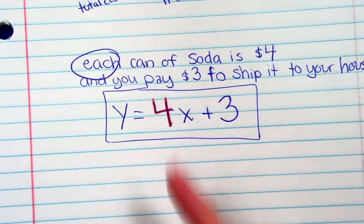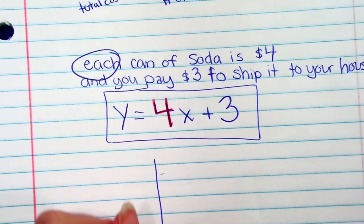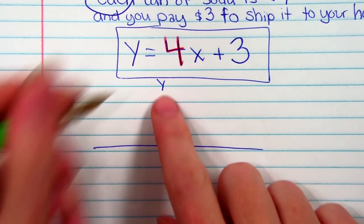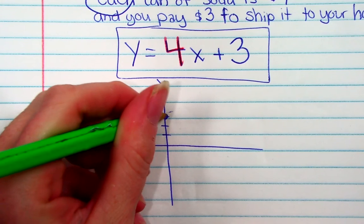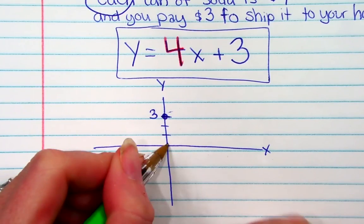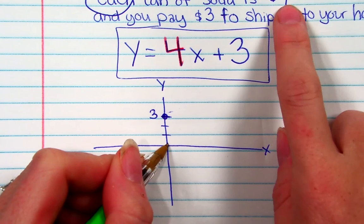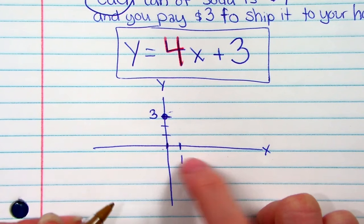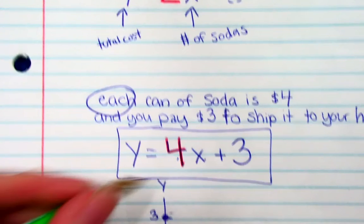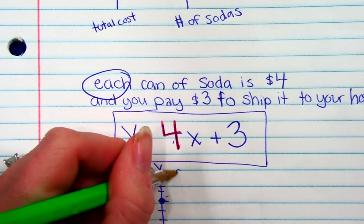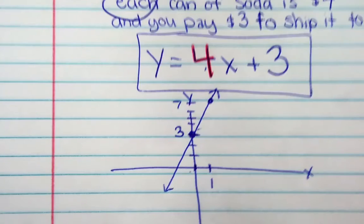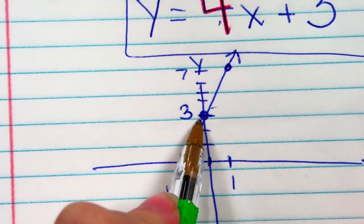That shows you how to set up the equation. If I wanted to graph this, my y-intercept is plus 3, so the graph crosses the y-axis at 3. That makes sense — when I buy zero cans of soda, I'm paying $3 in shipping. When I buy one soda, 1 times 4 is $4 plus the 3 is $7. Once you have two points, that is enough to graph a line. So my y-intercept is plus 3 and my constant rate of change is 4.